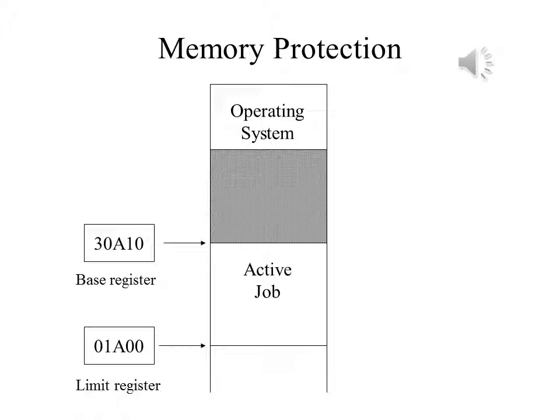There are many ways in which memory protection can be implemented. The simplest way to implement memory protection on a single-user computer would be to use a fence register that stores the lowest address that can be accessed by an application program. Every address reference made by application programs would be checked to see if they were higher or lower than this address. If they were higher, the instruction would be carried out. If they were lower, it would cause a memory fault or memory violation.